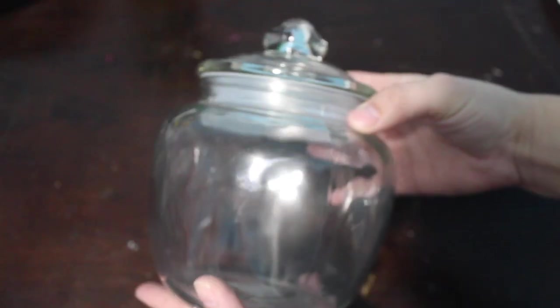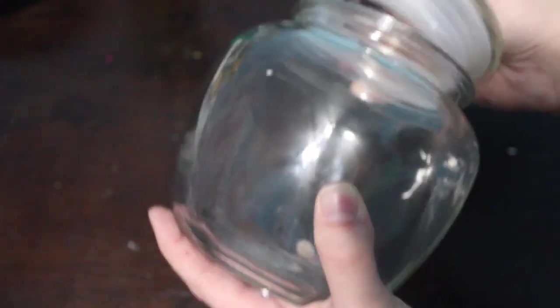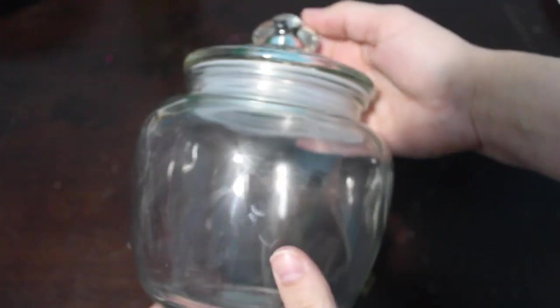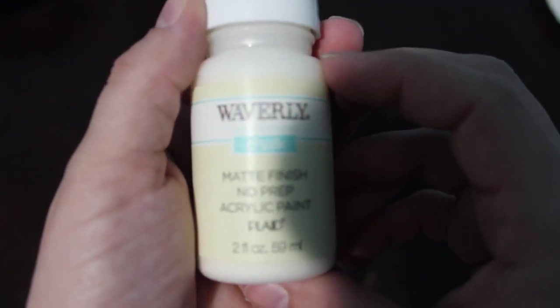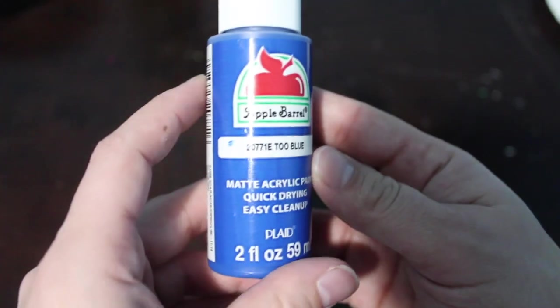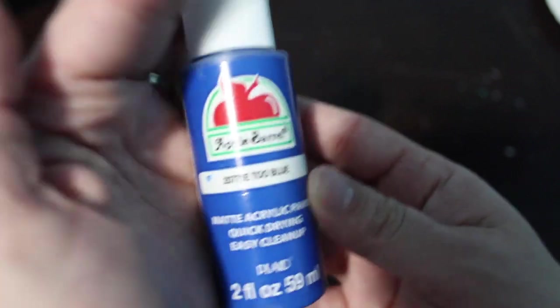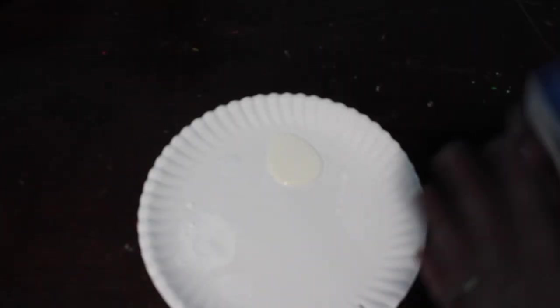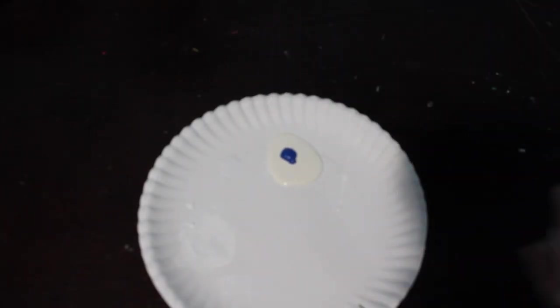So starting off, I already had this glass jar that was perfectly shaped like a honey pot. I did get it from Hobby Lobby and I'm going to be painting it with some chalk paint. So I'm using the ivory chalk paint by Waverly and I'm going to mix it. I did have two blues but I decided to go with this a little bit darker one. It's called the Two Blue I believe, so I just added a drop and then I mixed it.